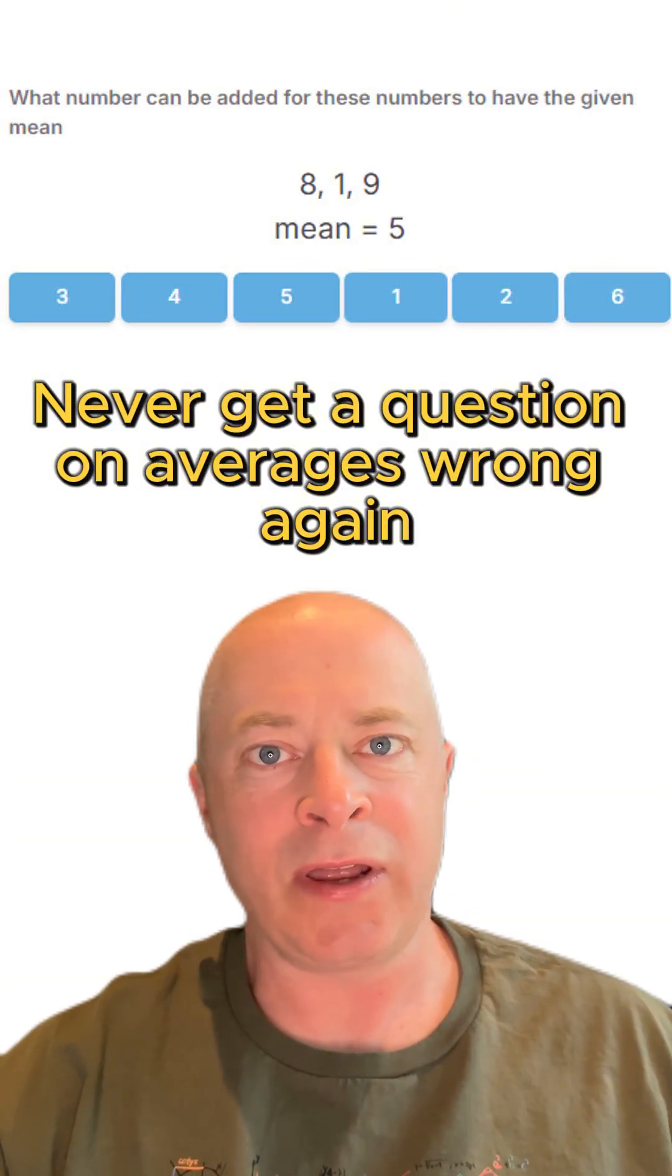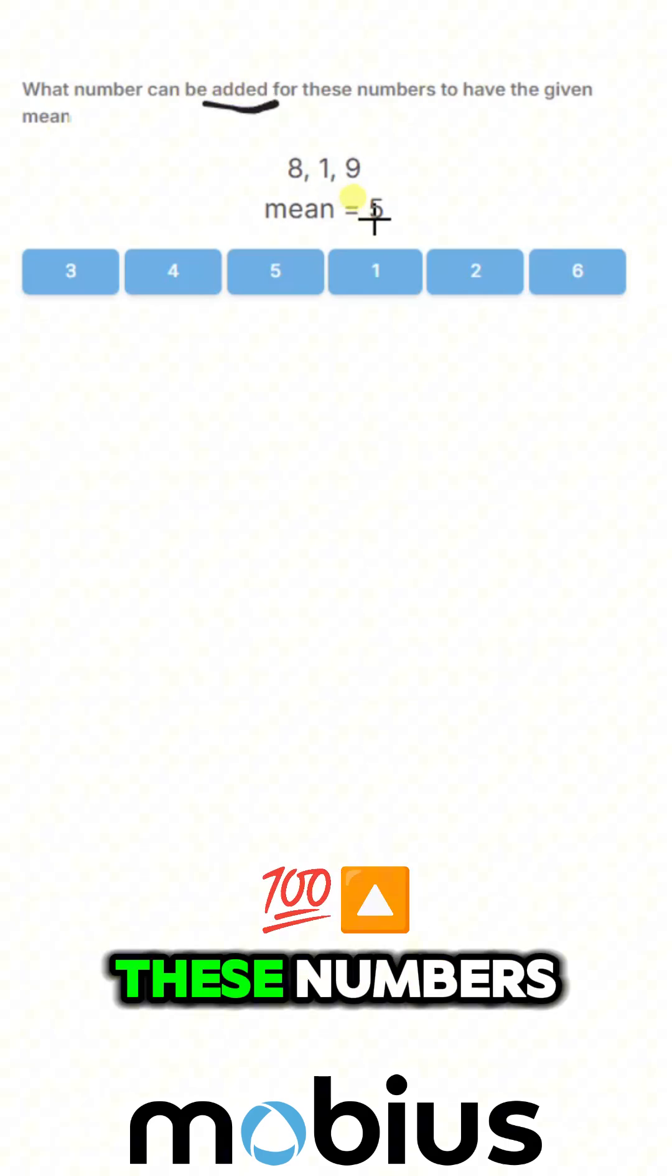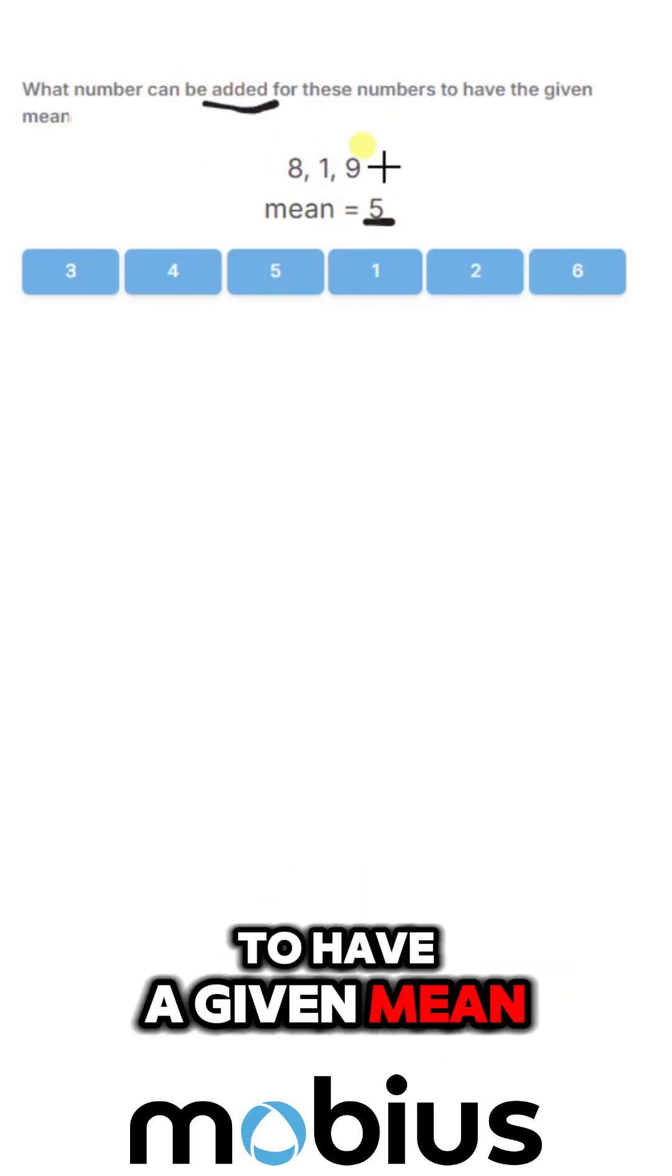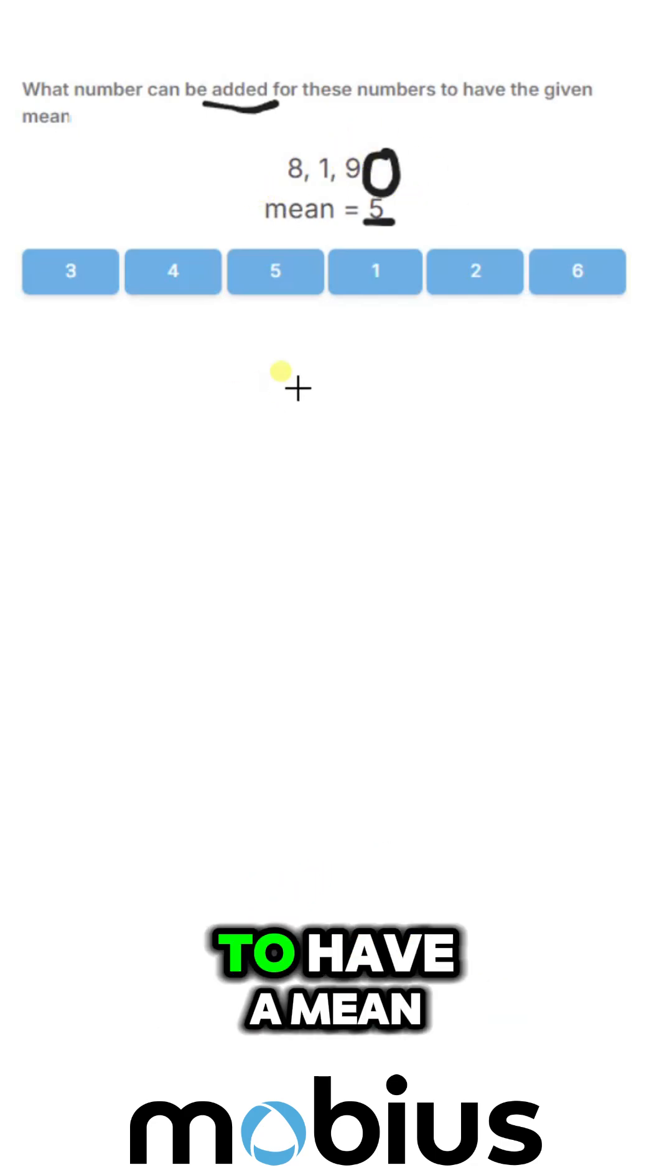Master this, and you'll never get a question on averages wrong again. We're looking for a number that can be added to these numbers to have a given mean of 5. So we want to add a number in here to have a mean of 5.